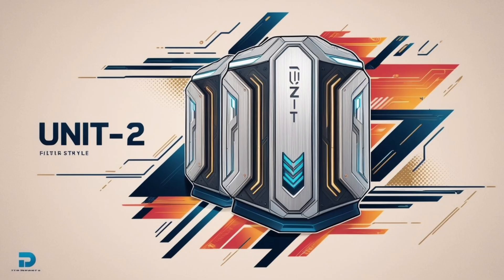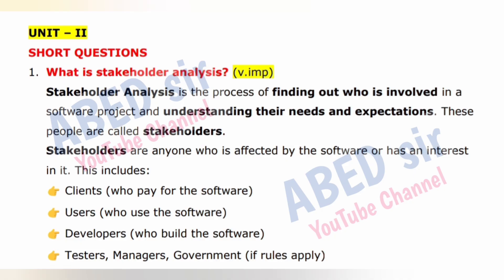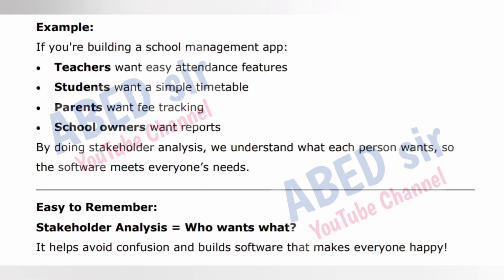Unit 2: The important short question is — What is Stakeholder Analysis? Stakeholder Analysis is the process of finding out who is involved in a software project and understanding their needs and expectations. These people are called stakeholders — anyone who is affected by the software or has an interest in it. This includes clients who pay for the software, users who use it, developers who build it, testers, managers, and government if rules apply. Example: if you are building a school management app, teachers want easy attendance features, students want a simple timetable, parents want fee tracking, and school owners want reports. By doing stakeholder analysis, we understand what each person wants so the software meets everyone's needs.